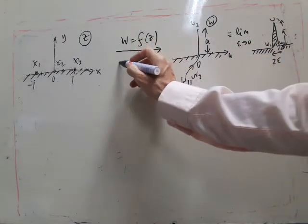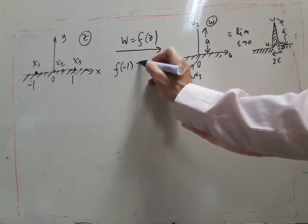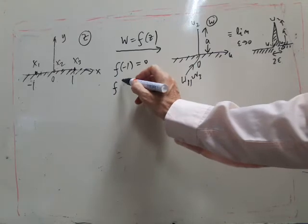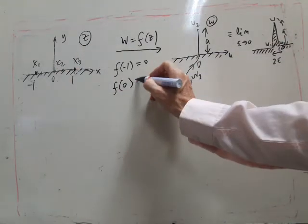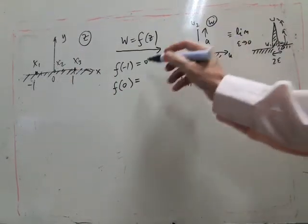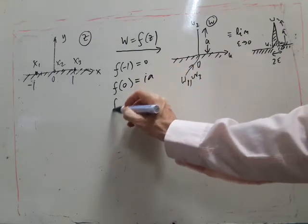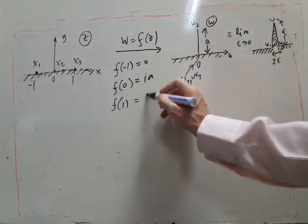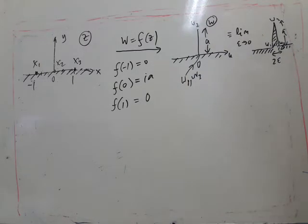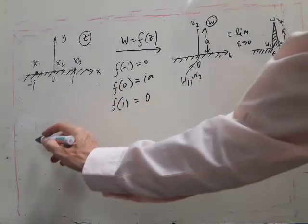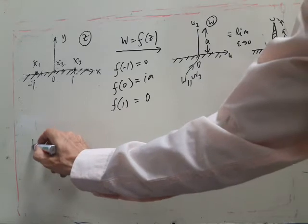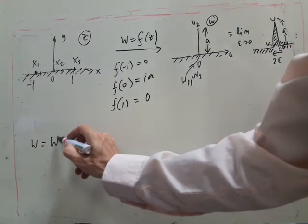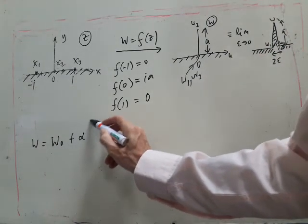So we've got that f of minus 1 gets mapped to 0, f of 0 will get mapped to ia, and f of 1 gets mapped back to 0 again. So the transformation starts off like this, as usual.